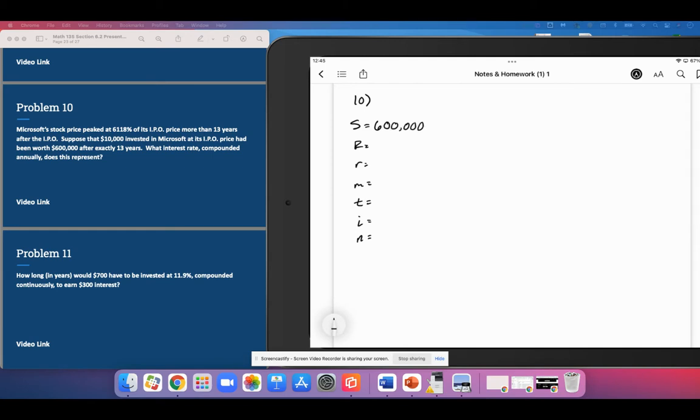We know that it started at $10,000. We don't know the rate, that's what we're asked to find. M is the number of compounding periods in a year, this was compounded annually, so 1. T is 13 years, I is R divided by M, N is MT. So you can see there's quite a lot of information in that problem, we didn't even need the 6,118%.